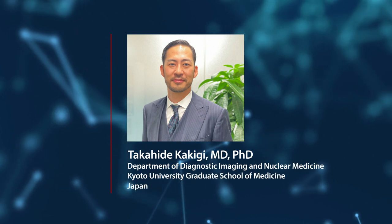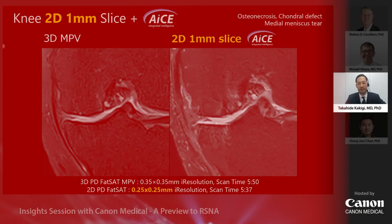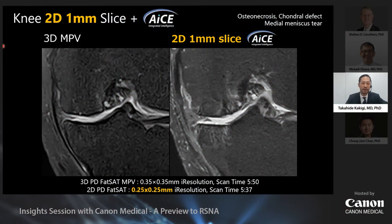Let's take a look at the difference in region delineation between 2D and 3D images. This is the case of osteonecrosis of the femur and tibia. The left side is a 3D fast saturated MPBS image, like a SPACE image.